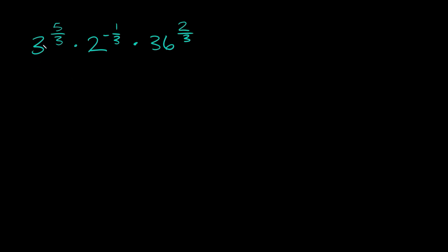So the goal with these is always trying to figure out a way to either get the same bases or the same exponents. And in this case we can actually find a way to get similar exponents because if you notice something all of them have a 3 in the denominator.